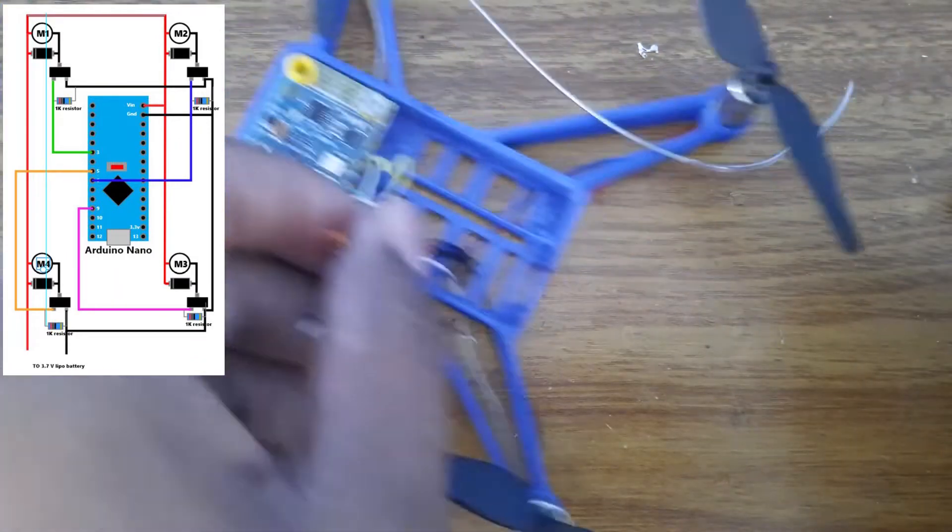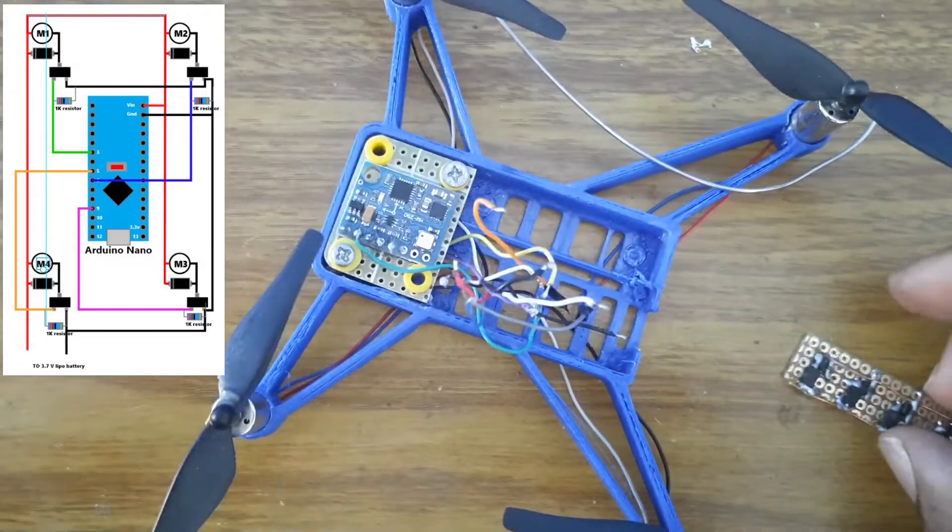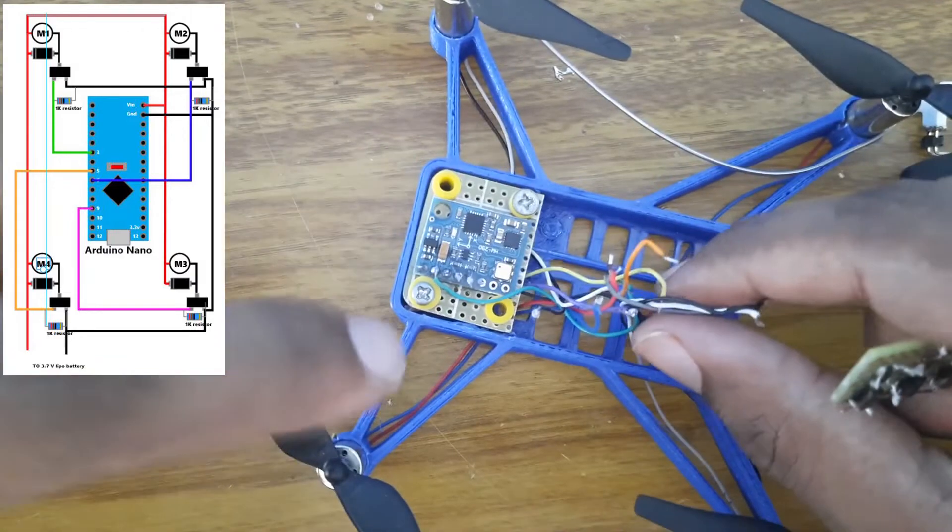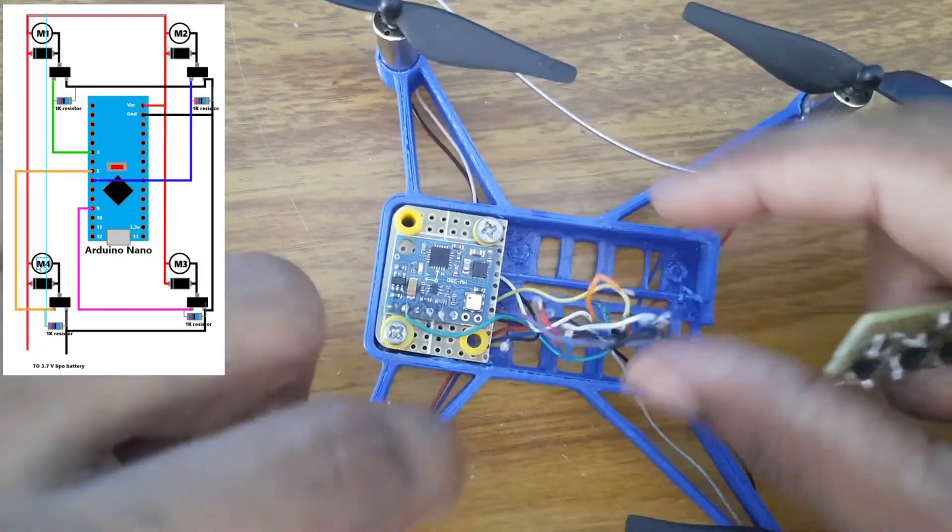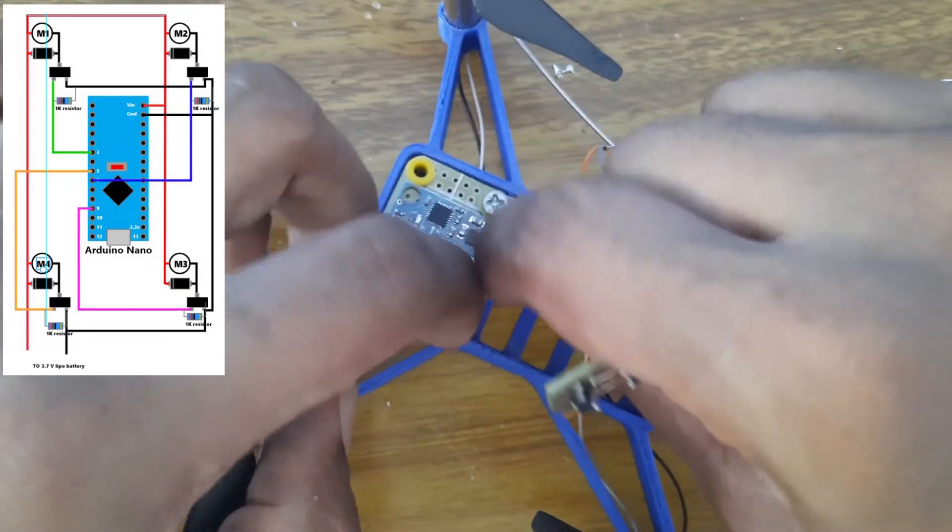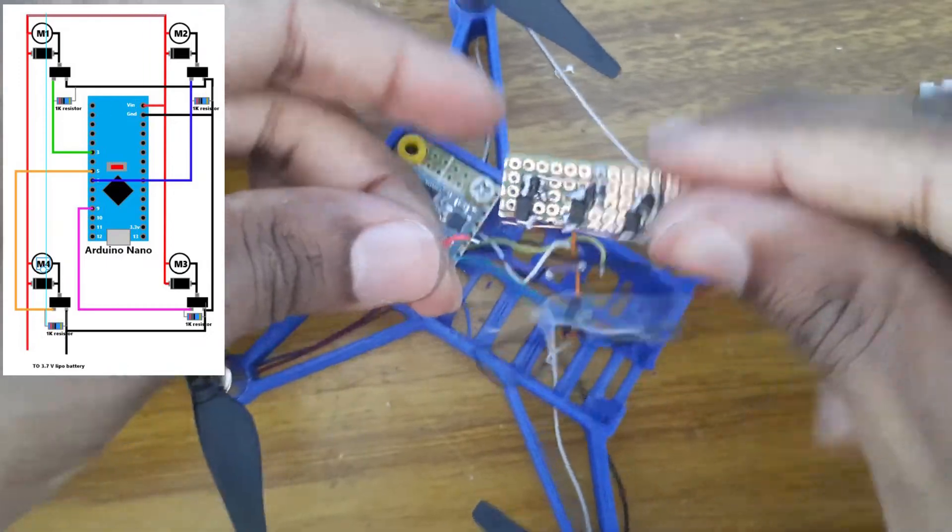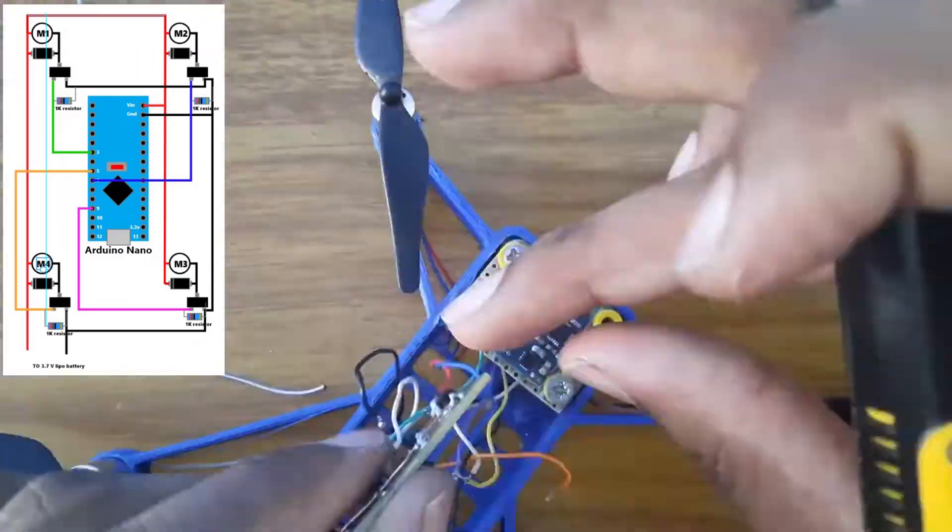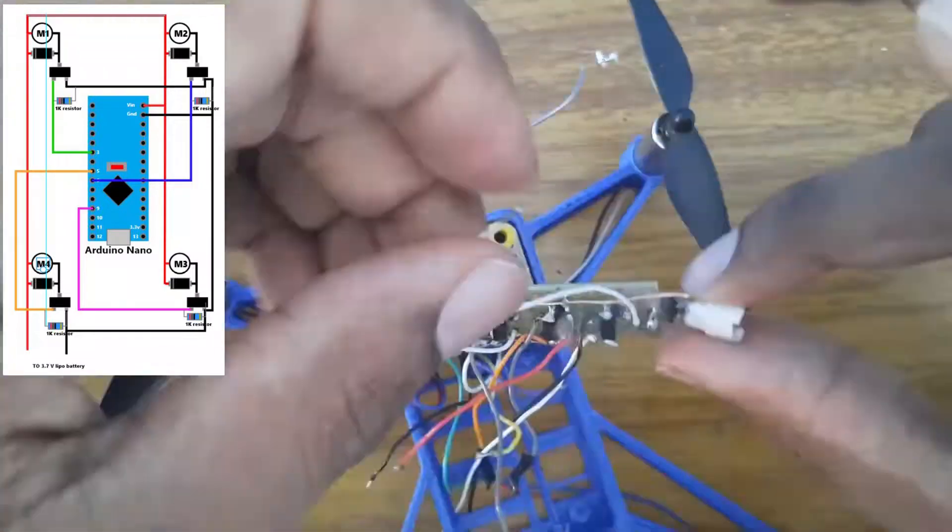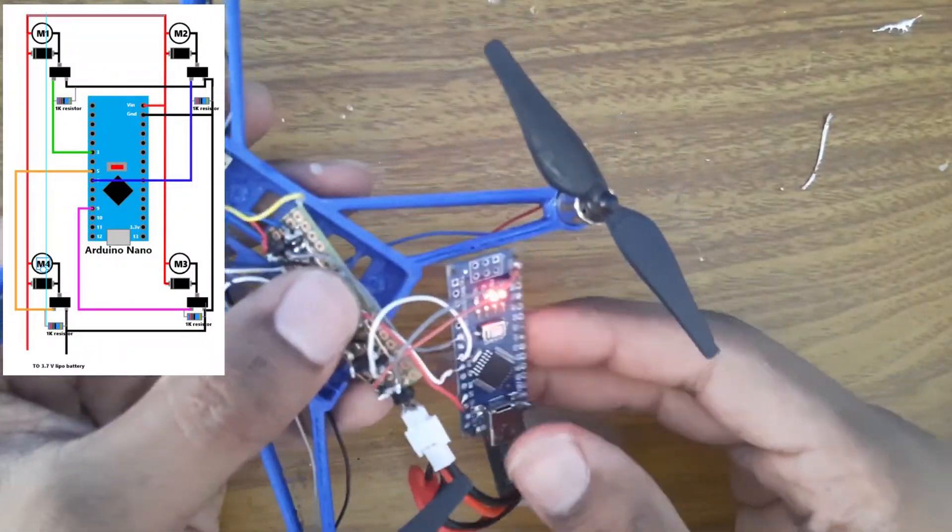Now we will just add the motors. Remember I told you that the first one will be for the first motor. Our first motor is this one and this should rotate clockwise. So what I will do is take the red wire of this motor and connect it to the positive side.